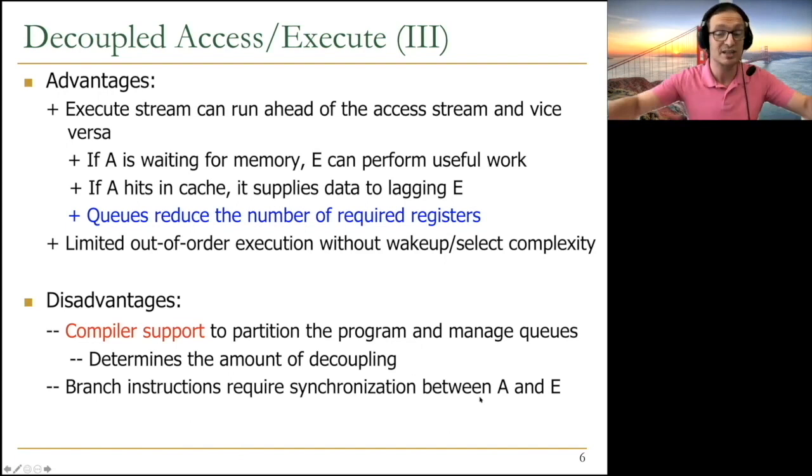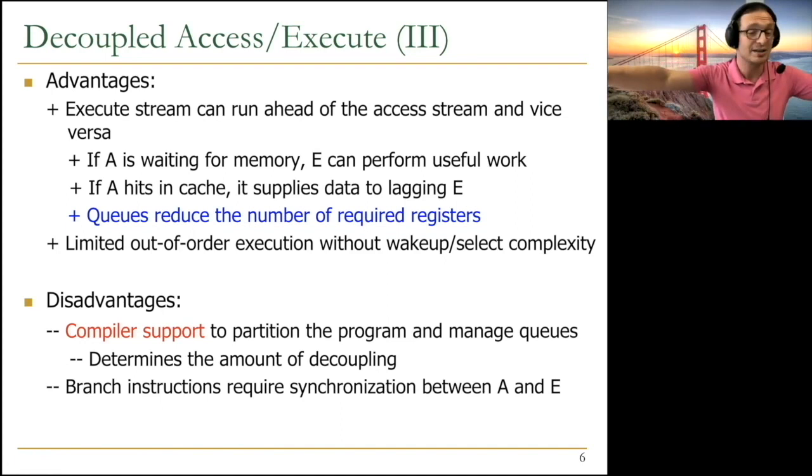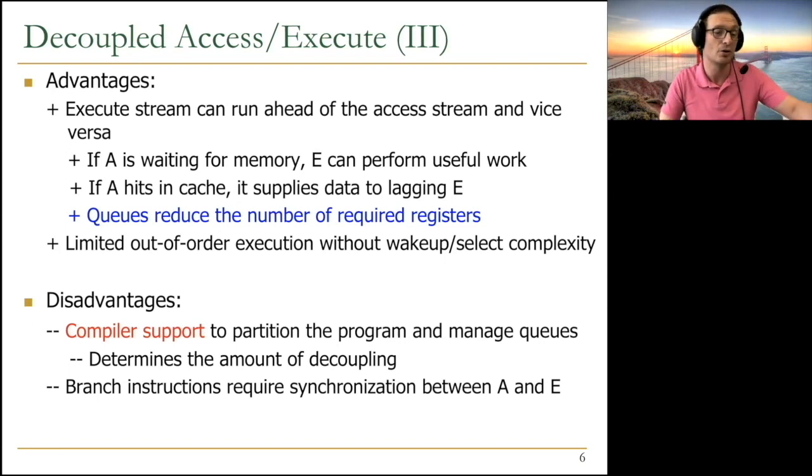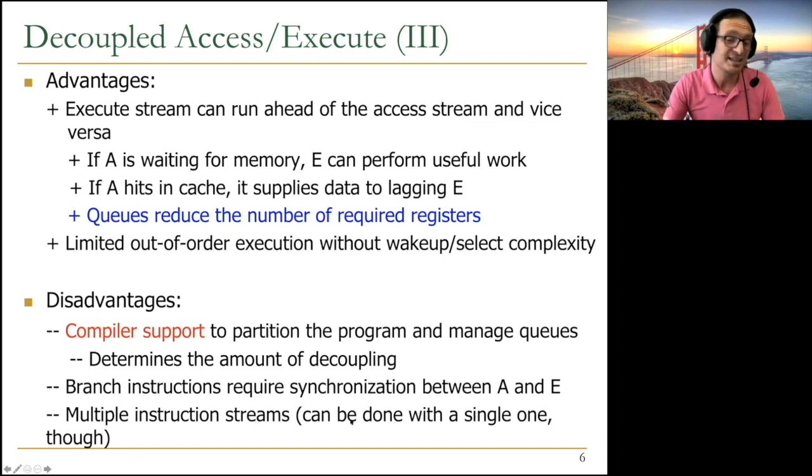One other disadvantage is branch instructions require synchronization between A and E, because you're taking a single instruction stream and separating it into two instruction streams. What happens to branches? They get executed in the execute processor, but you need to signal the access processor to make sure that the access processor is not on the wrong path forever. The other disadvantage is multiple instruction streams. You need to generate two instruction streams or program two instruction streams, which may be cumbersome. But later work showed that this can be done with a single one by taking the single instruction stream and steering it dynamically into multiple processors.